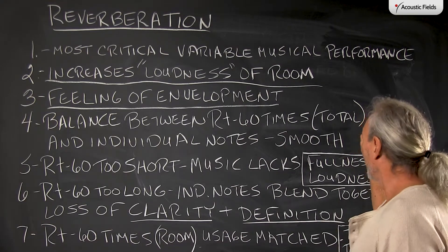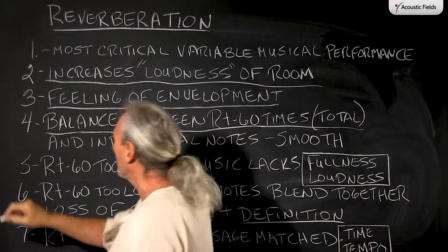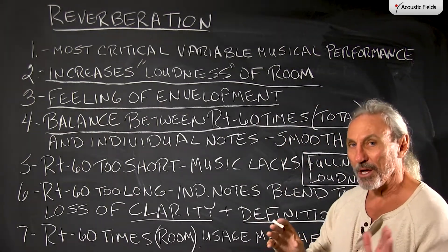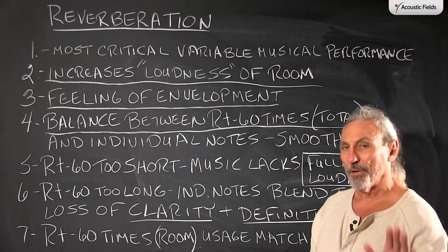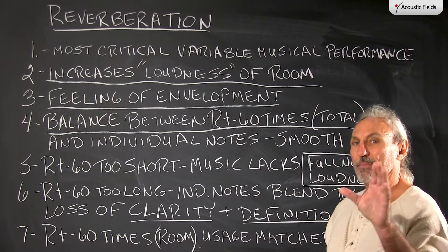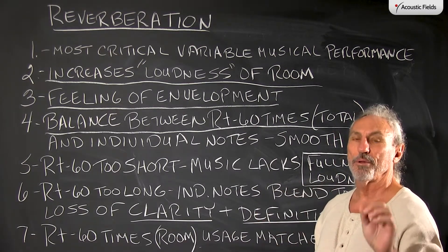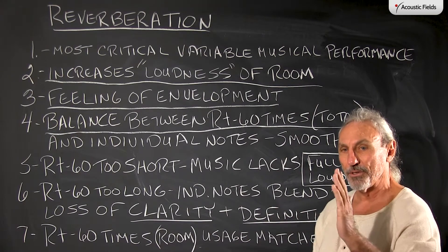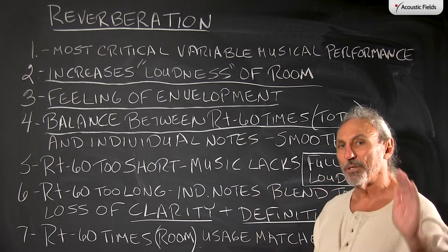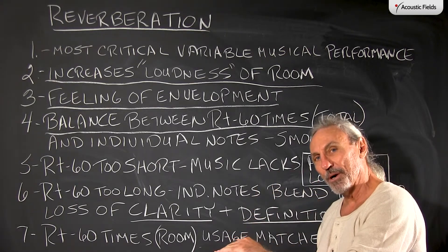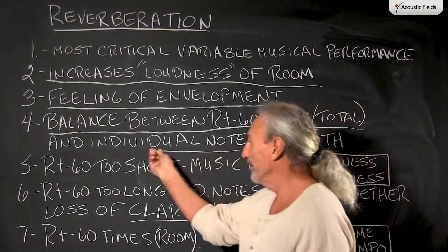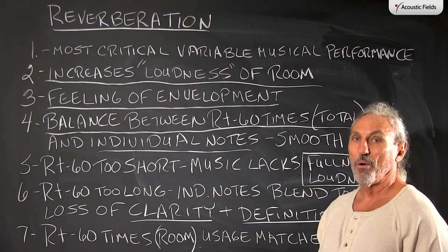When you have a balance — and this is really critical — when you have a balance between the RT60 times and the individual notes, if we're looking at a graph, we see the RT60 times measured, but those times — the whole system, the whole room — all the fundamentals and harmonics are measured, and then there's a time signature between each note. There has to be a correlation between the decay rate of the RT60 overall and the individual time signature of the individual notes that make up that whole curve.